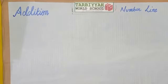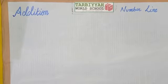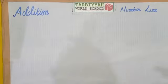In the previous video, we did addition on the number line of a single digit number. Now we will do the addition of a two digit number on the number line.